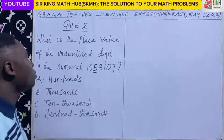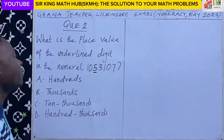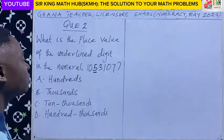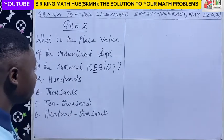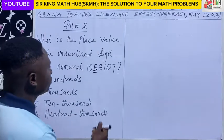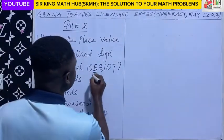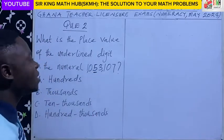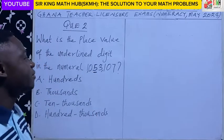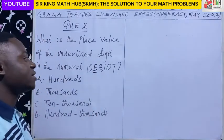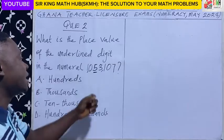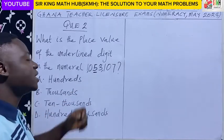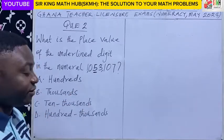Question 2: what is the place value of the underlying digits in the numeral? We've been given the numeral 1,053,107 and the underlined digit here is 5. So we have to find the place value of 5.